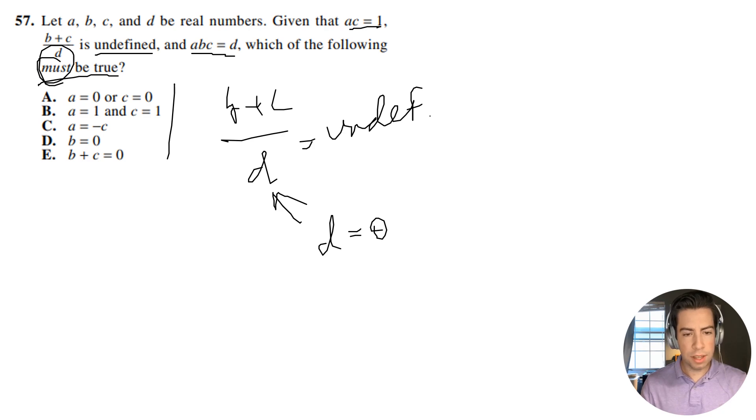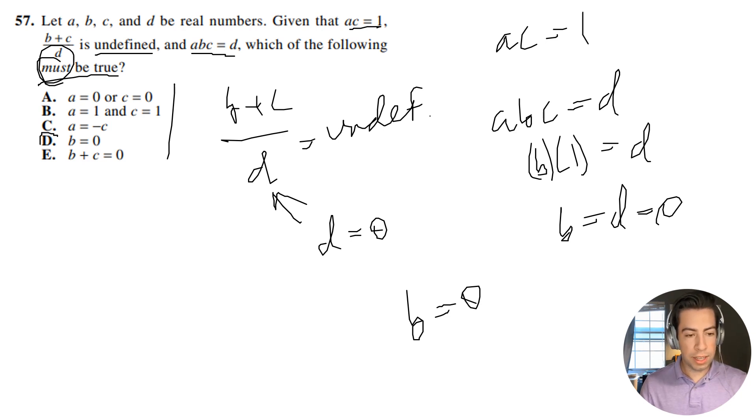Okay, so if that's the case, we also know that AC equals 1. And if ABC equals D and AC equals 1, then I'm just going to have 1 times B here, and that has to equal D. So if B equals D and D equals 0, that means that B has to equal 0. All right, so the correct answer is D.